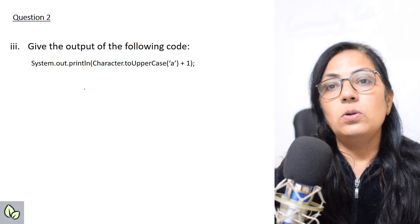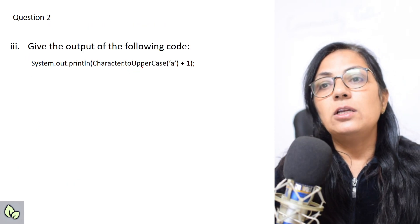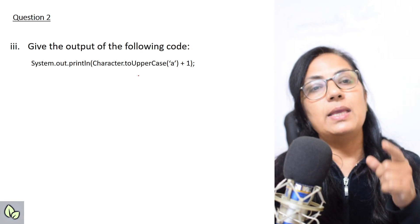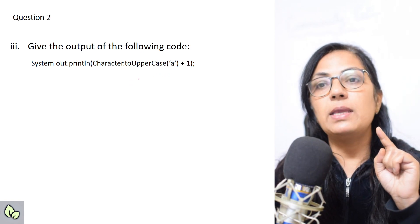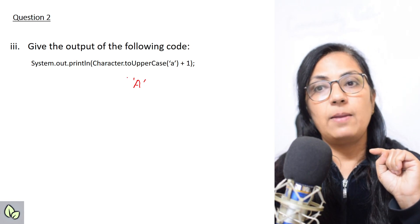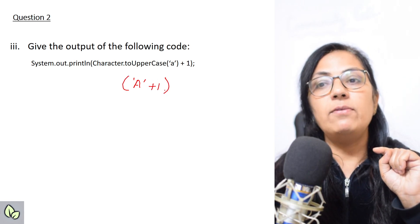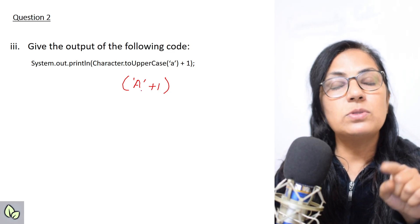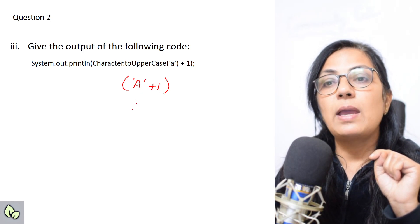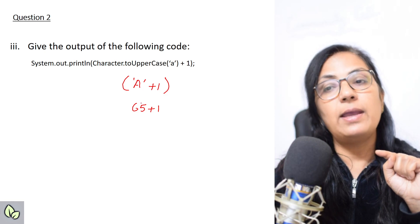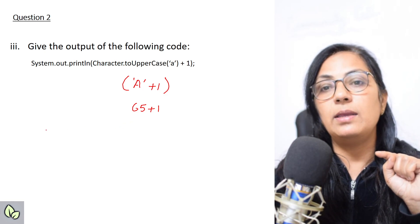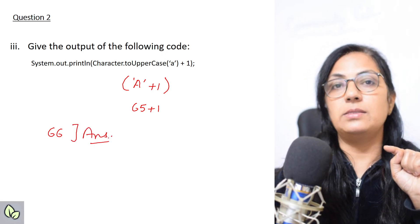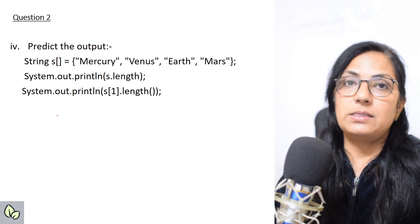Next: give the output of System.out.println(Character.toUpperCase('a') + 1). toUpperCase converts lowercase to uppercase, so 'a' becomes 'A'. When a character is added to an integer, it uses the ASCII code of the character. ASCII of 'A' is 65, and 65 + 1 = 66. The answer is 66.